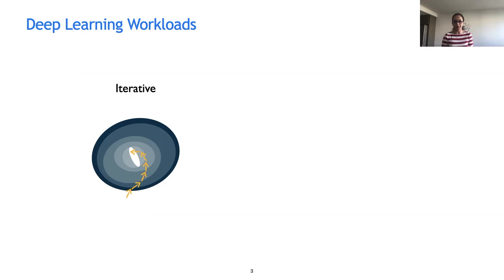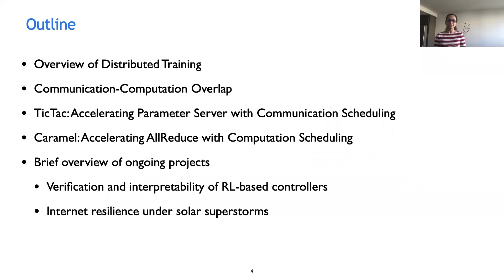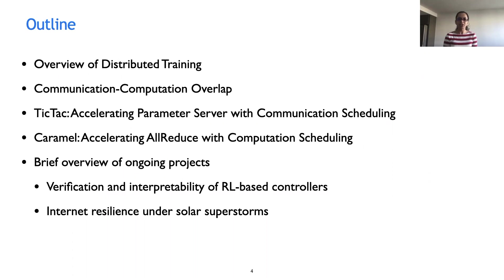This workload is both compute and network intensive. State-of-the-art models in domains like vision and NLP have millions to billions of parameters that are updated after every iteration. So gigabits worth of parameters need to be aggregated across workers after each iteration. Today in this talk, I'll first give a brief overview of the distributed training environment and then discuss the importance of computation-communication overlap in this setting. Then I'll briefly describe two systems that we built, which address this challenge under two different network aggregation patterns: parameter server and all-reduce.